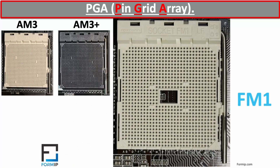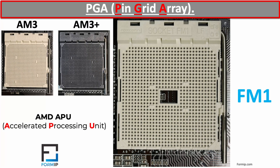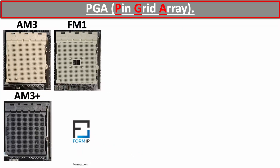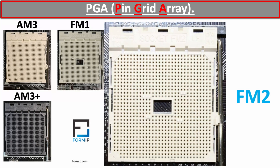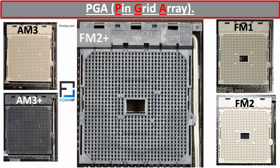The FM1 socket was released in 2011 and has 905 pins. These socket types were designed for AMD APU — Accelerated Processing Unit — processors. The term APU allows a chip to function as both a processor and a graphics accelerator on a single chip. Next is the FM2 socket with 904 pins, released in 2012. We also have the FM2+, published in 2014 with 906 pins. FM2+ is simply a revision of FM2.